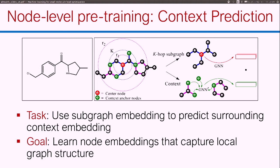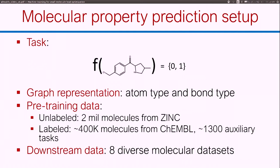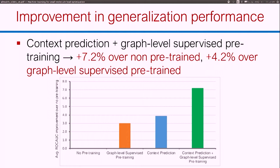We test this on molecule property prediction as a binary classification task: given a molecule, predict yes or no for whether it's active for a particular property. We test on eight downstream datasets from the MoleculeNet benchmark, and we apply a scaffold split to test for generalization ability, ensuring that molecules in the test split are very structurally different from the training splits. We show that combining node-level context prediction with graph-level supervised pre-training — the green bar — results in a 7% improvement in AUROC on average over no pre-training, and a 4% improvement over naive graph-level pre-training alone.